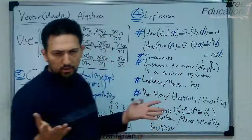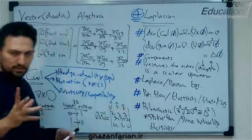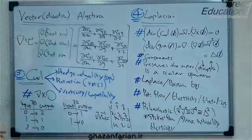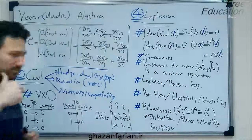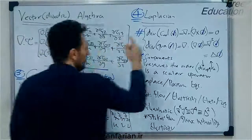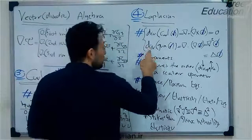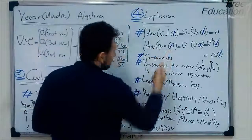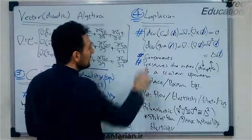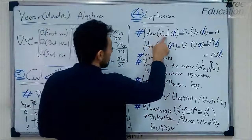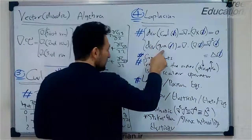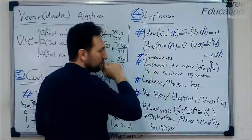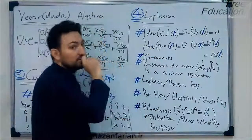This is an identity which can be proved simply. However, the divergence of the gradient of something — this is the divergence of gradient, not divergence of curl — is not zero.